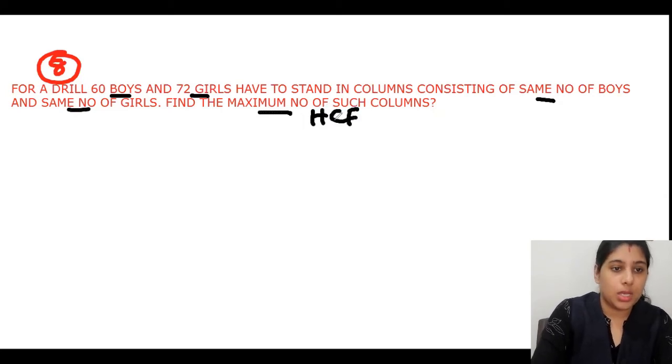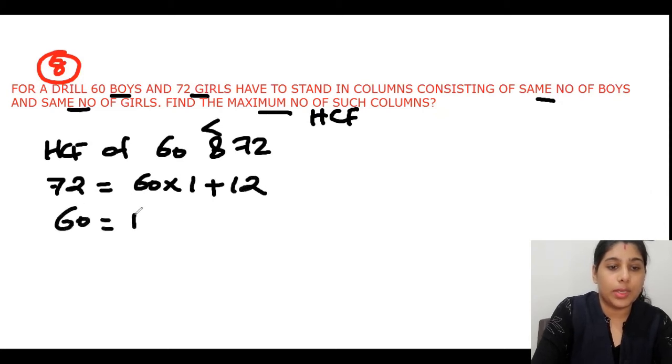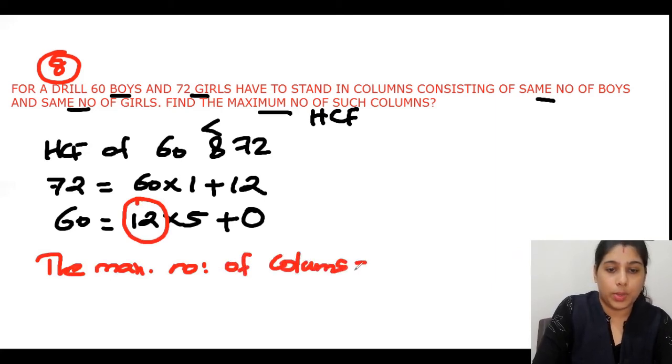HCF of 60 and 72. 72 is larger. 72 equals 60 times 1 plus 12 as remainder. Then 60 equals 12 times 5 plus 0. So the HCF is 12. The maximum number of columns is 12.